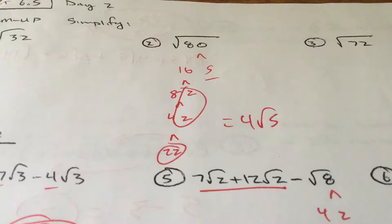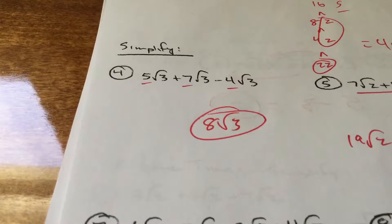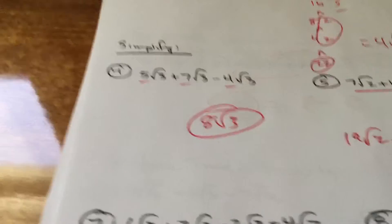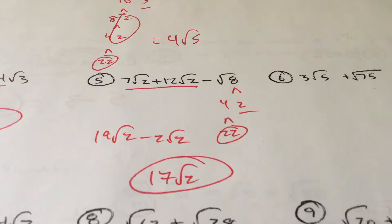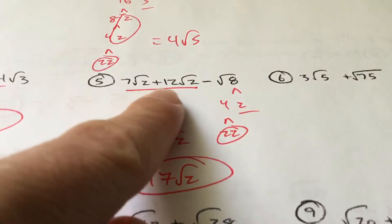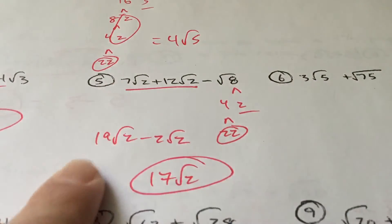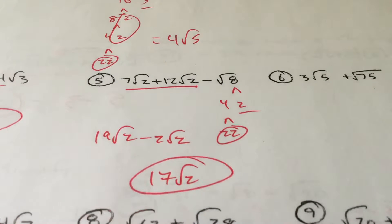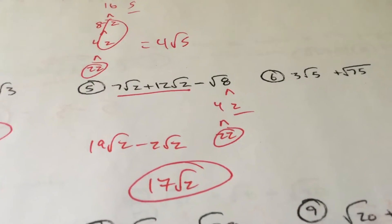Just some more warm-up — simplify. That's 4 root 5. Now we're adding and subtracting radicals. You can only combine like terms if you're taking the square root of the same number. Square root of 3 terms combine; square root of 2 terms combine, and so forth. On number 5, we have to break things down first. That's right away 19 root 2. We've got to break down the square root of 8, which is 2 root 2, giving you 17 root 2. The y's get to break out.